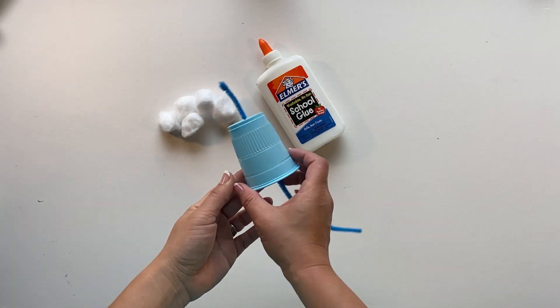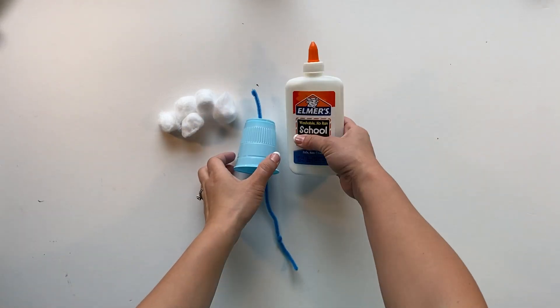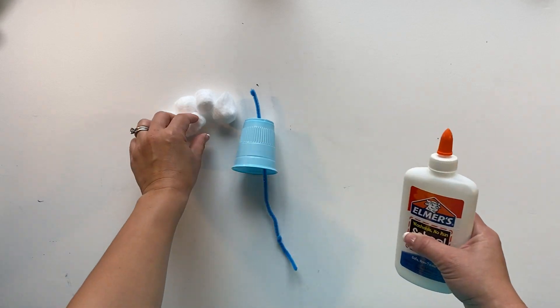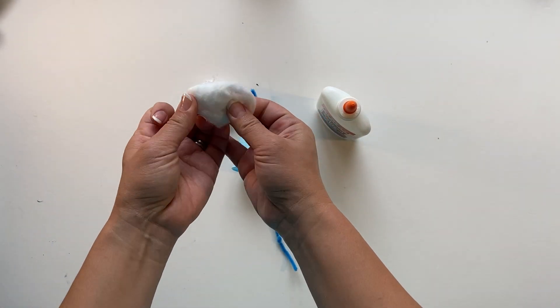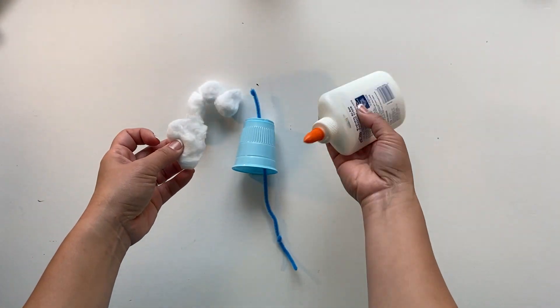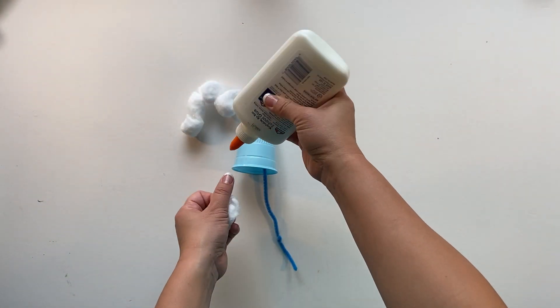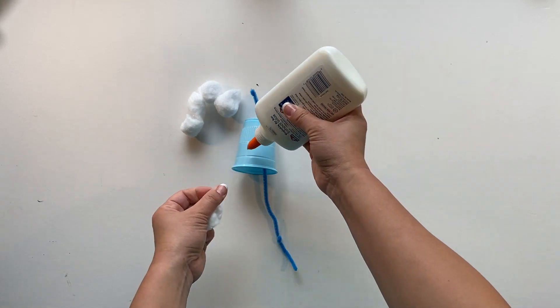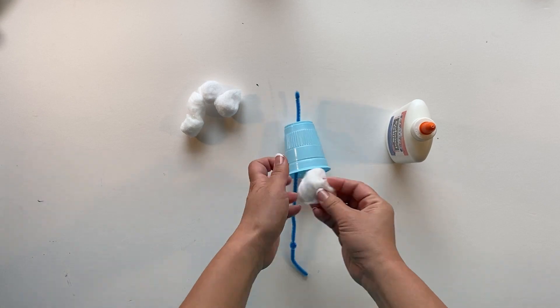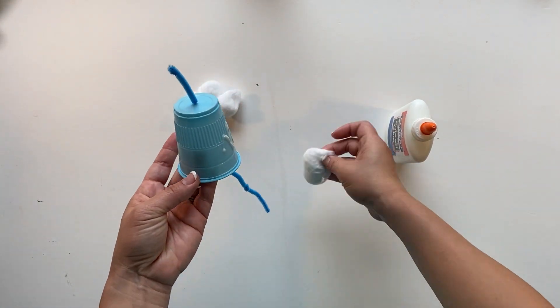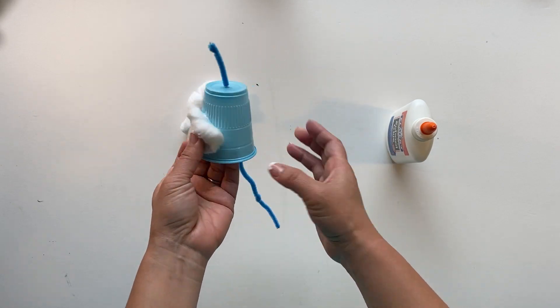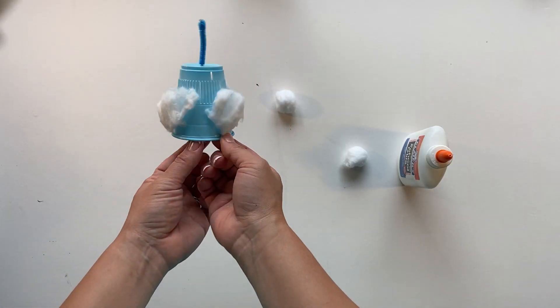Now we're going to decorate our cup. Have some glue and we have some cotton balls. You can even fluff it out a little so they're not full circles, and then you're just going to put some glue onto your cup and you put the cotton on it. That's your clouds.